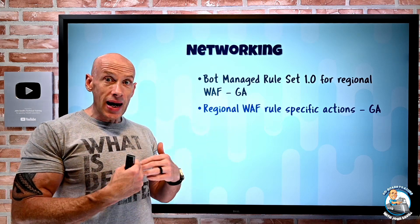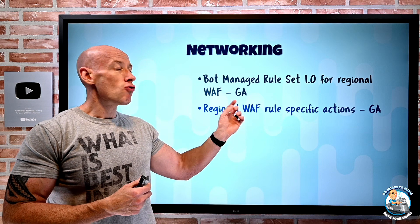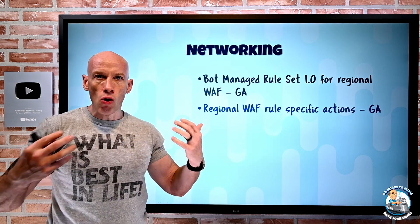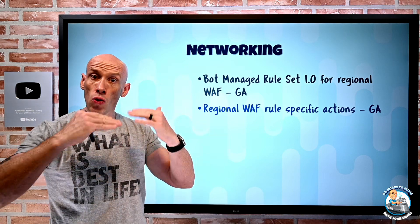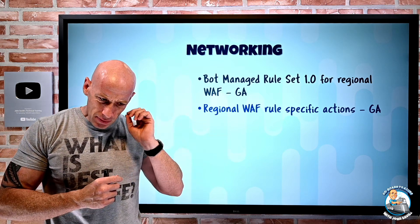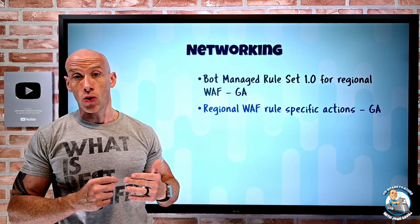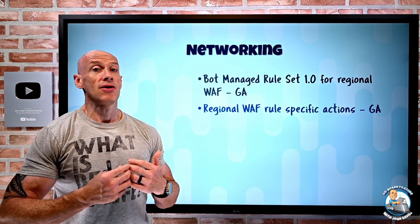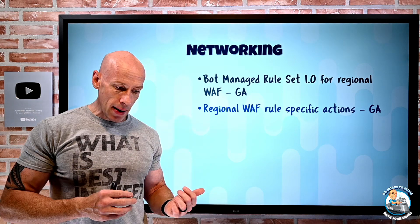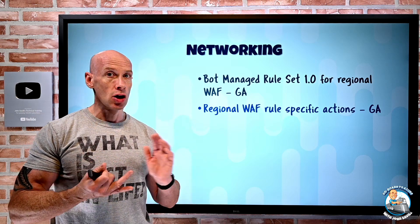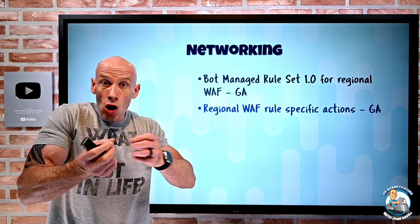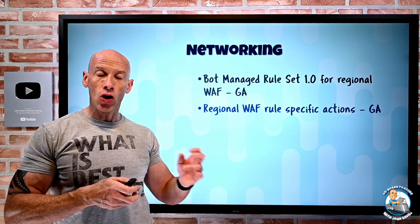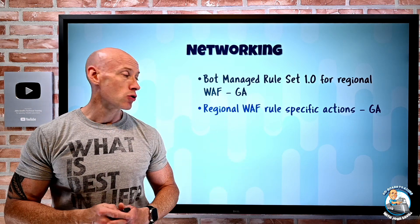Also for regional WAFs as part of the App Gateway add-on, you now have rule-specific actions. In the past, with the core rule set and bot rule set which have multiple rules, you could only enable or disable a rule. Now, building on that, at the rule level you can actually set different actions. For the core rule set, maybe it's a block, a log, or an anomaly score modification. For the bot rules at rule level, allow, block, or log. So you have a lot more granularity in what you want to do with those rules.